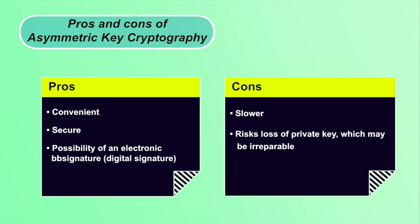Another drawback is that when you lose your private key, your received messages cannot be decrypted. Often, people use public key cryptography to create a shared session key and then communicate through symmetric key cryptography using that shared session key. This way you get the best of both worlds: the speed of symmetric key cryptography along with the convenience of public key cryptography. This is called hybrid key cryptography.